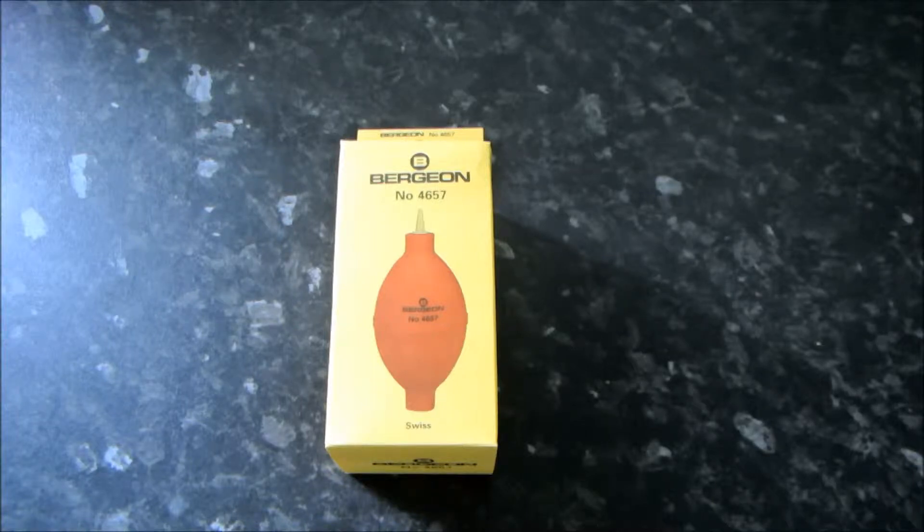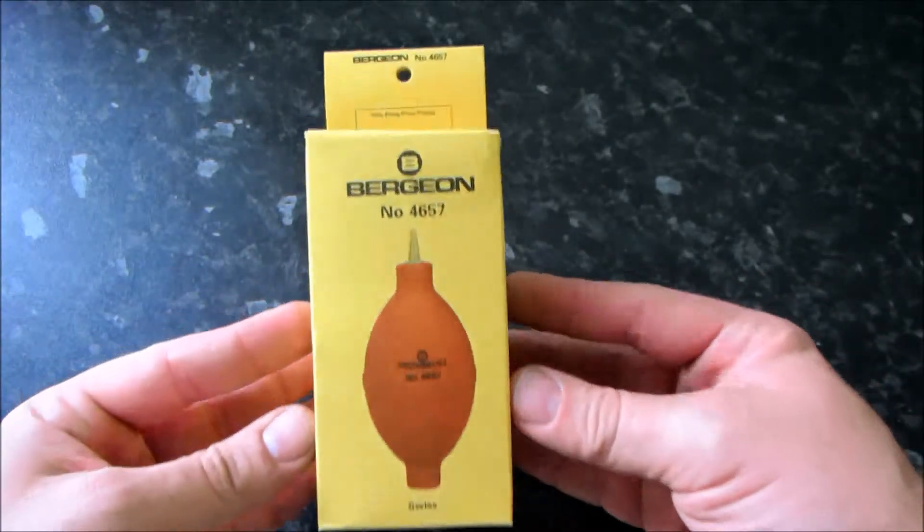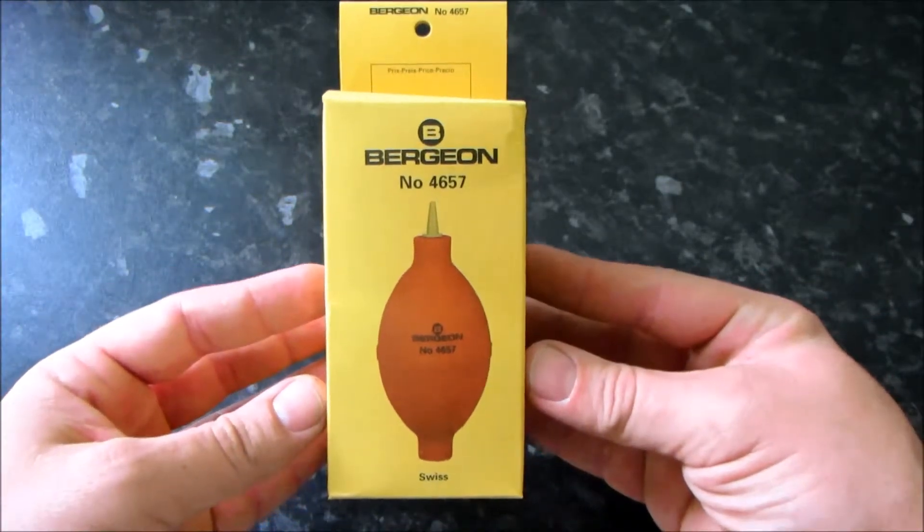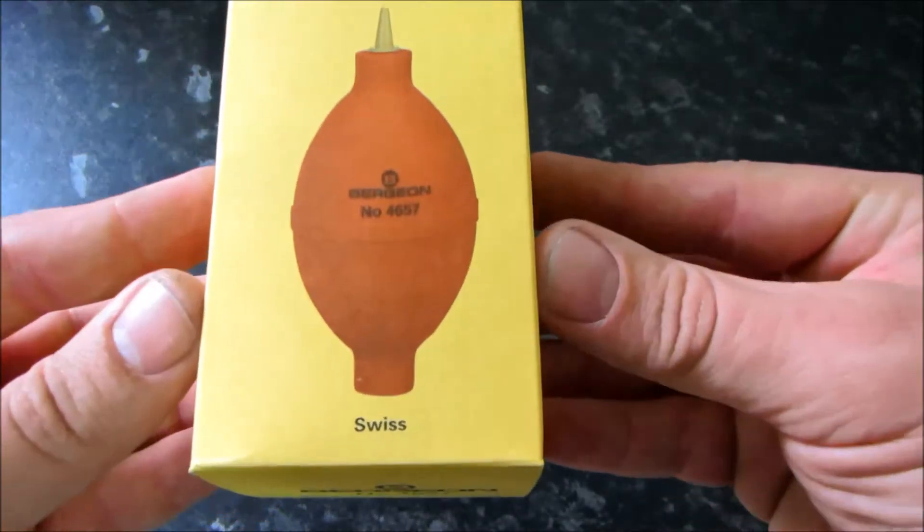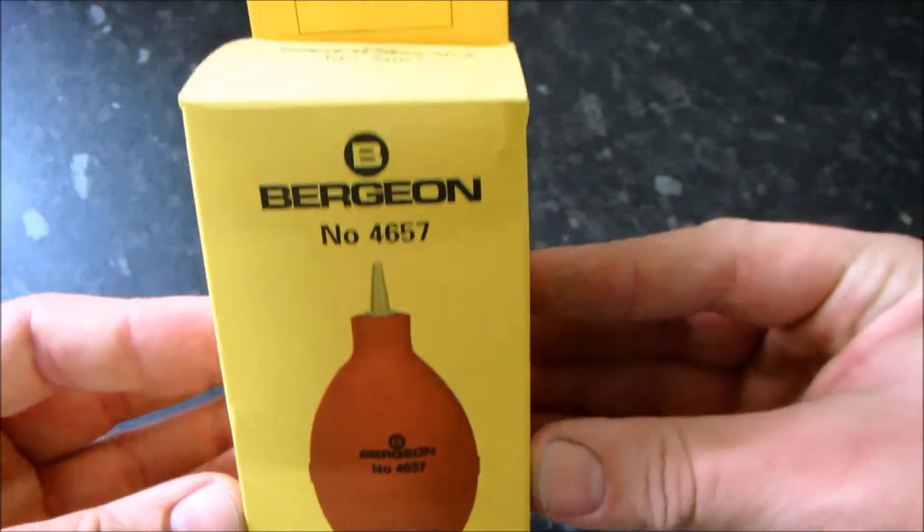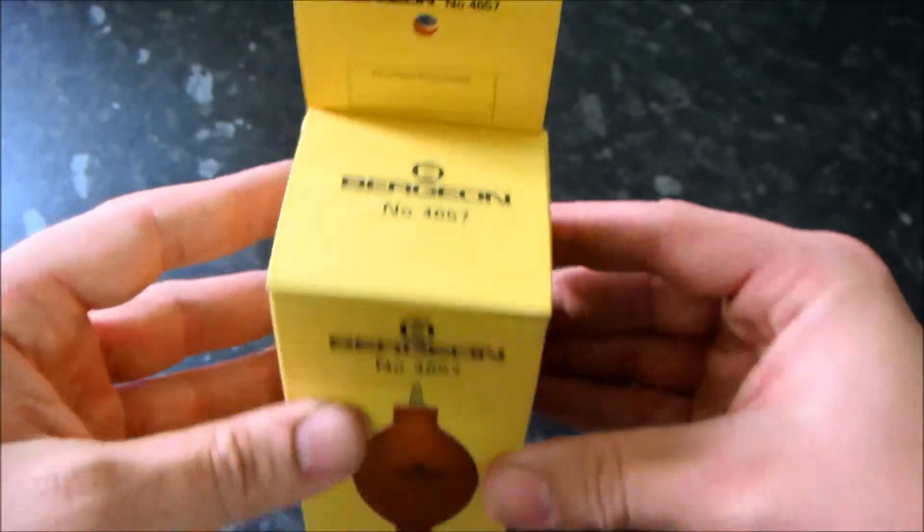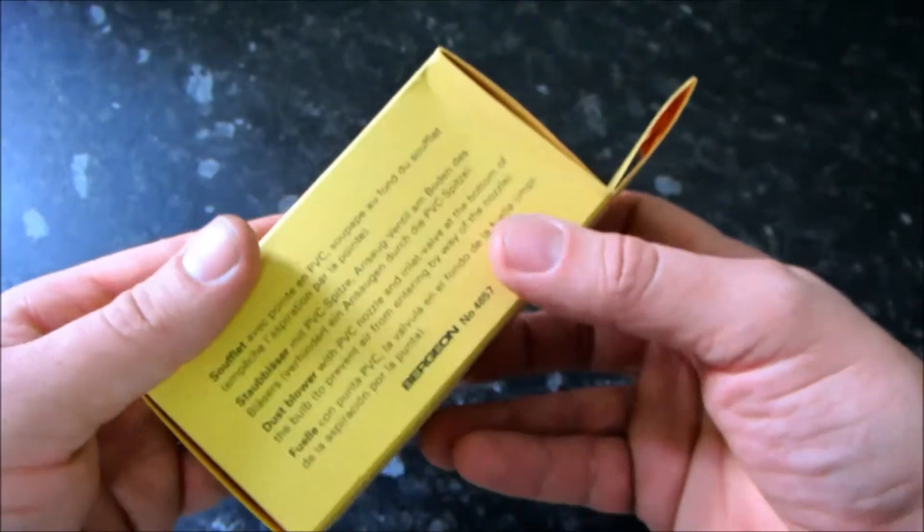This is the Bergeon 4657 watchmakers blower. It is a rubber bulb with a nozzle at one end giving precise directional control and an inlet valve at the other end preventing air and dust from entering the nozzle end.